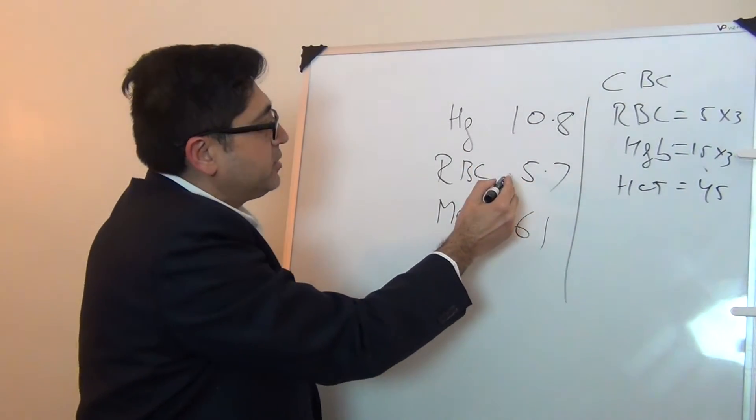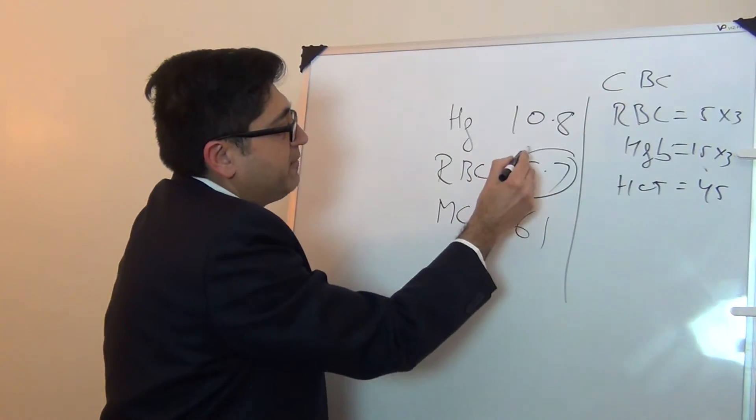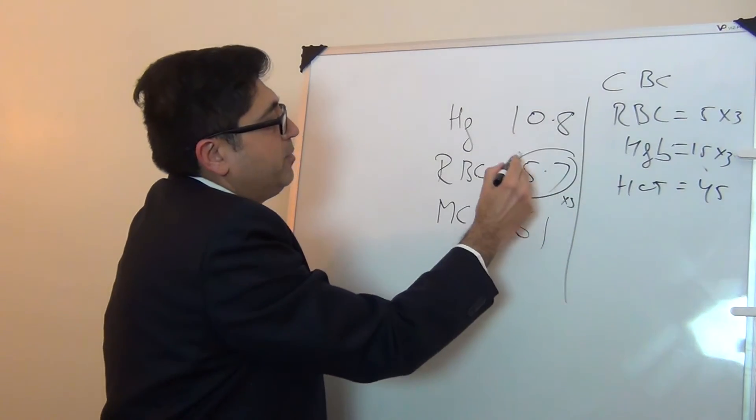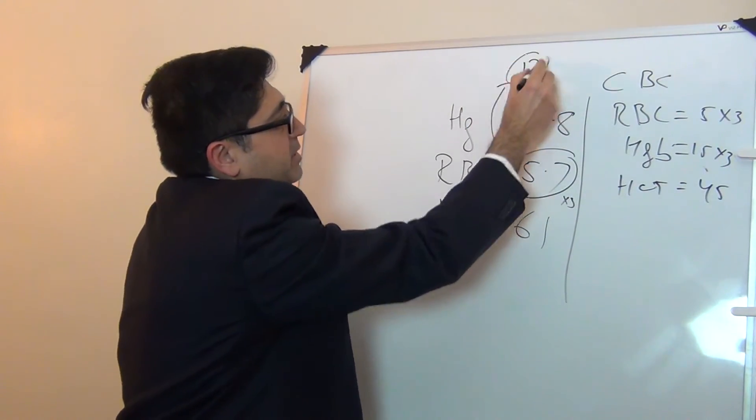Of three is broken. If you multiply 5.7 by 3, it should be around 17, but this hemoglobin is only 10.8.